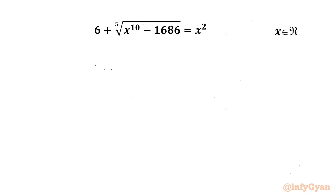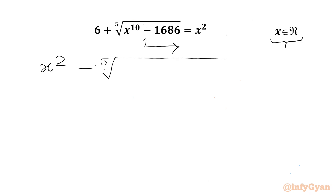Hello my dear friends, welcome back to Infigyan. Today in this video we have a very interesting question from radical equations which we will solve for the real values of x. Let's get started by taking this fifth root term to the RHS. The equation is: x squared minus the fifth root of (x to the power 10 minus 1686) equals 6.